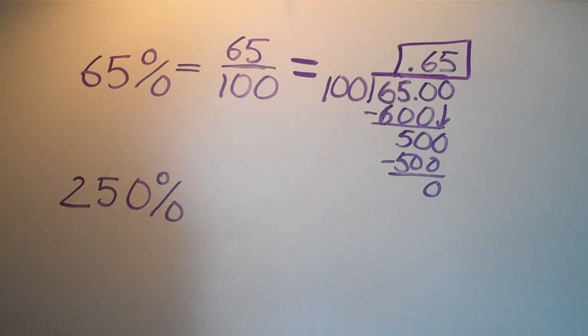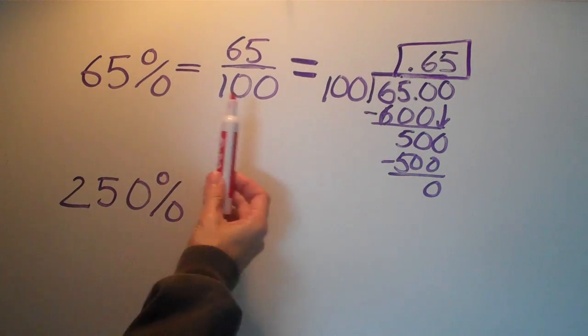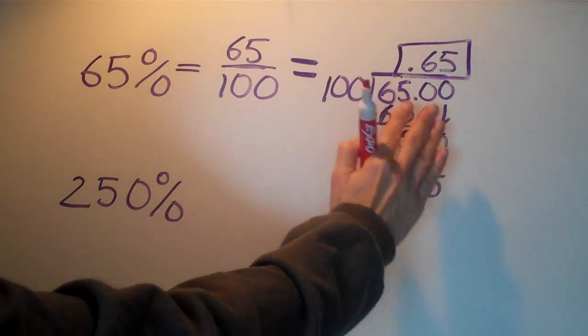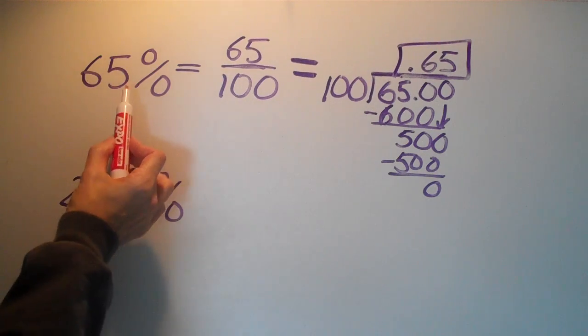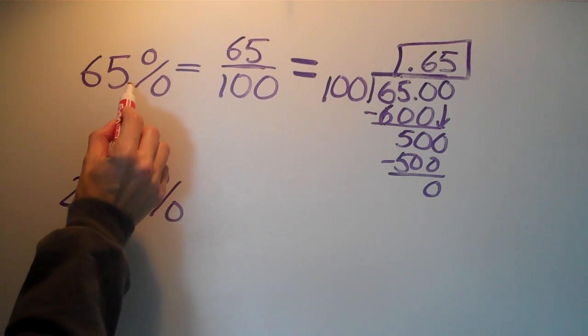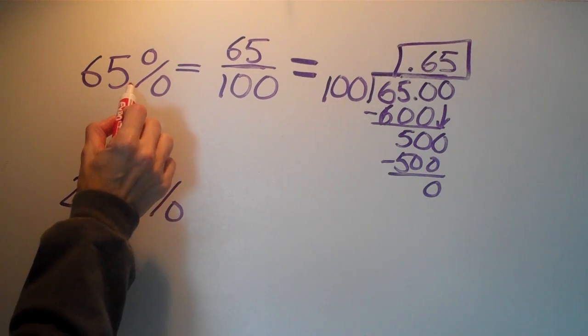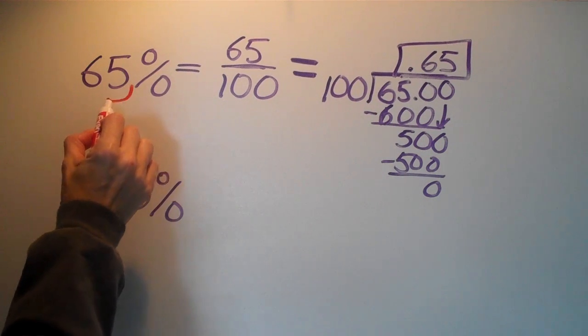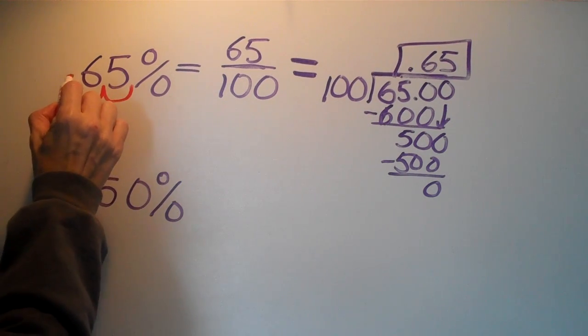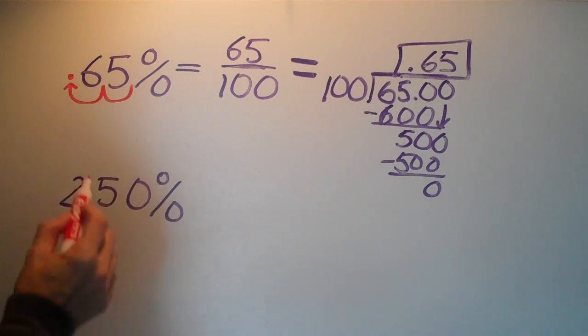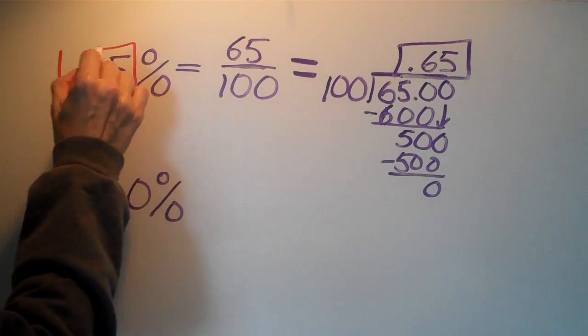But we know there's a really shortcut way of doing this whole process without doing the whole division problem. If we look at the 65 percent and just imagine the decimal to be here and move two places to the left and add the decimal there, we do get the same answer: 0.65 or 65 hundredths.